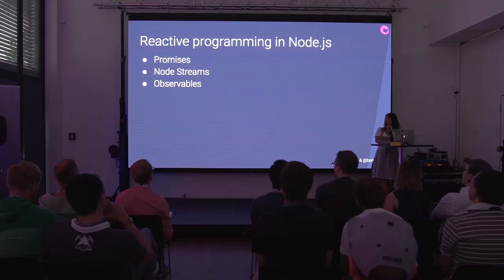Let's talk about reactive programming in Node. There are typically three types you'd use: promises, Node streams, and observables.